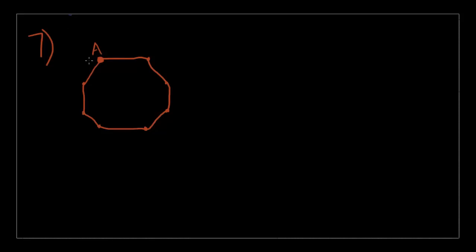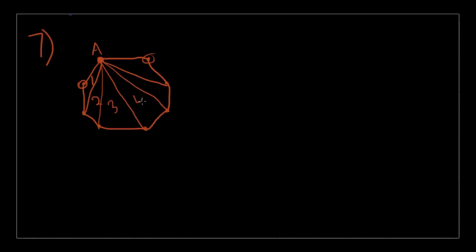Point A is already connected to two points — this point and this point — so we really can't draw those again. Plus, point A is on point A itself, so you can't draw point A to point A. Let's draw one line to this point, one line to this point, one line to this point, one line to this point, and one line to this point. There's one triangle, two triangles, three triangles, four triangles, five triangles, six triangles formed when you do that. So that's choice C.